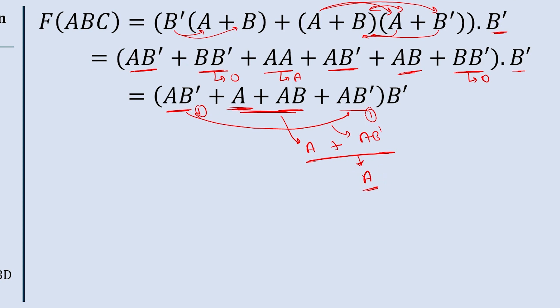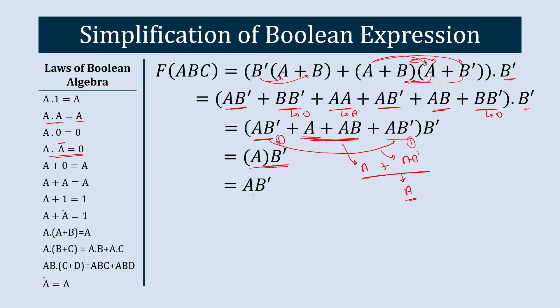So we write A in place of this entire term, and the final result is A into B dash, or AB dash. This AB dash is the simplified version of this Boolean expression.